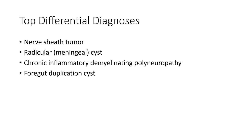Differential diagnosis includes nerve sheath tumor, radicular cysts, chronic inflammatory, hemorrhagic, and polyneuropathy, as well as well-defined dural ectasia cysts.